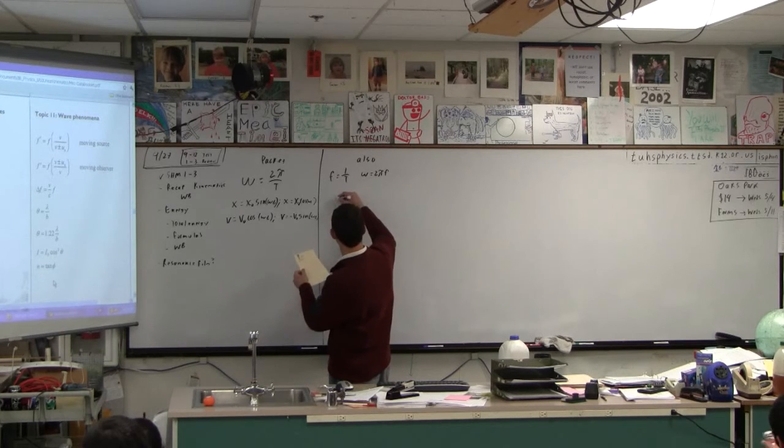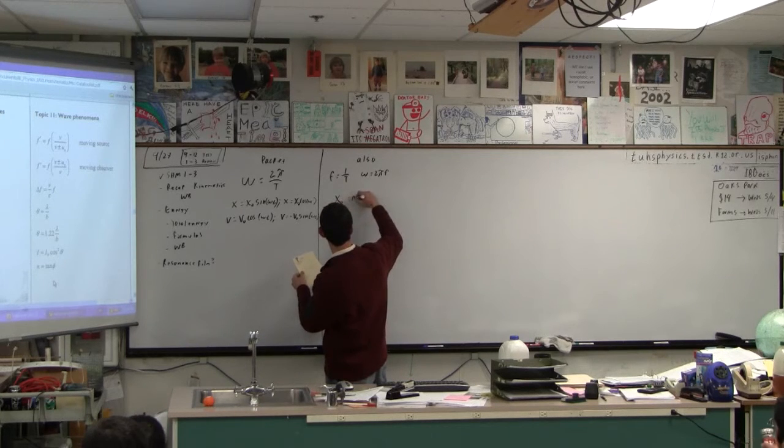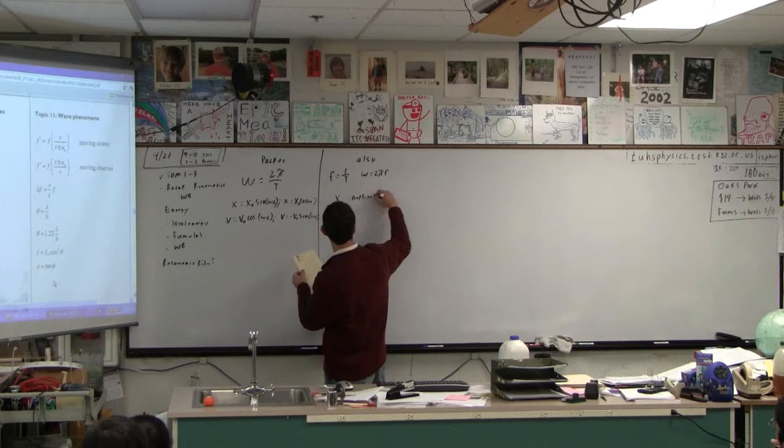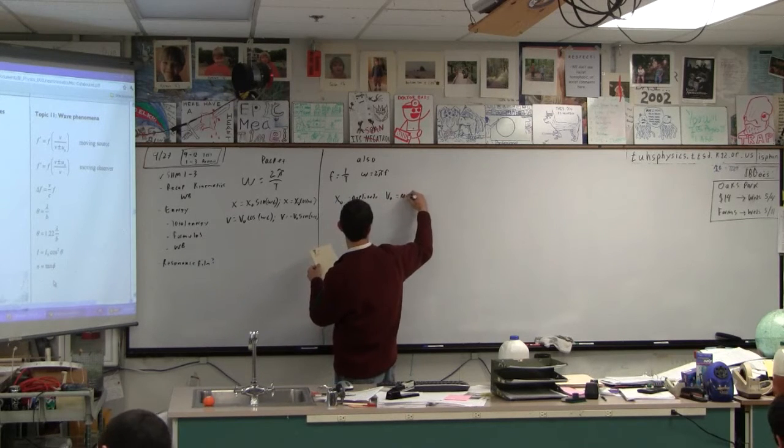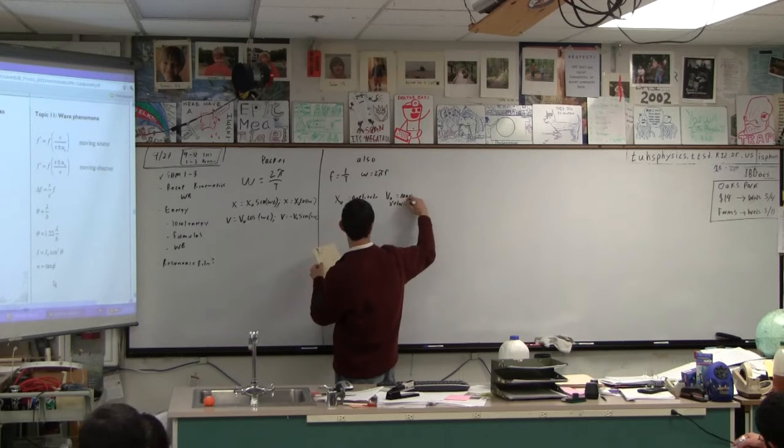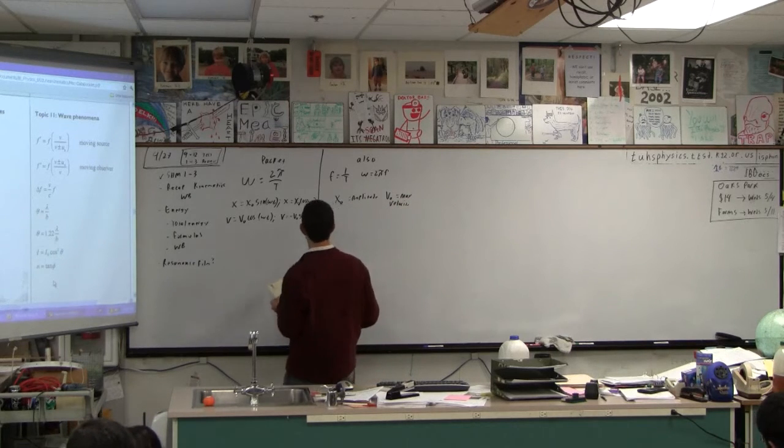So what you need to know here that's not in the data packet is that x₀ is the amplitude, and v₀ is the max velocity. That's a very handy thing to know.